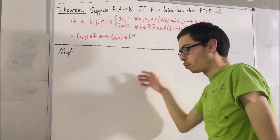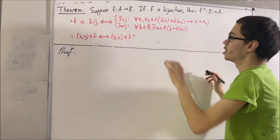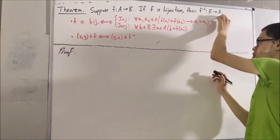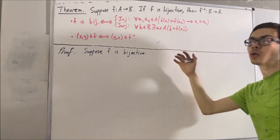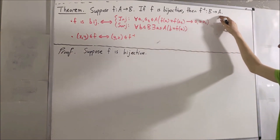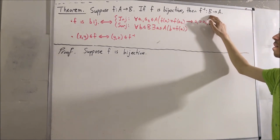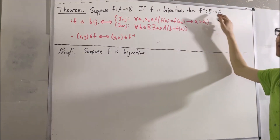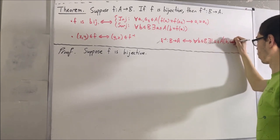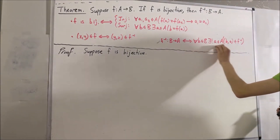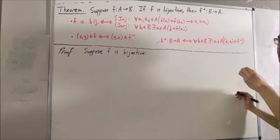Okay, so now let's get into the proof. Let's suppose that we've already declared our function f from A to B, and our goal now is to prove that if f is bijective, then f⁻¹ is a function from B to A. So let's suppose f is bijective. Our whole goal is to deduce that f⁻¹ is a function from B to A, which means that for every element b in B, there is a unique element a in A such that (b, a) is an element of f⁻¹. So this is the statement we're trying to prove, and we're trying to prove it for every element in B. So give me an arbitrary element in B — I'll call it b.